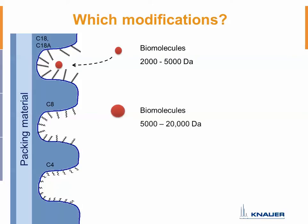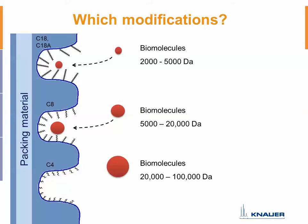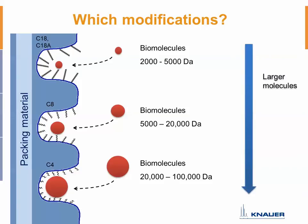But if your molecule gets bigger — greater than 5,000 Daltons and up to 20,000 Daltons — it won't fit into the pore anymore, because the C18 chains take up a lot of space inside the pore. Here, a C8 modification of the wide-pore silica gel is perfectly suited. And for even larger biomolecules, up to about 100,000 Daltons, you can use the C4 modification. So keep in mind: the larger the molecules, the shorter the C chains need to be, so the remaining pore space is larger, while you can still use the same silica gel support.